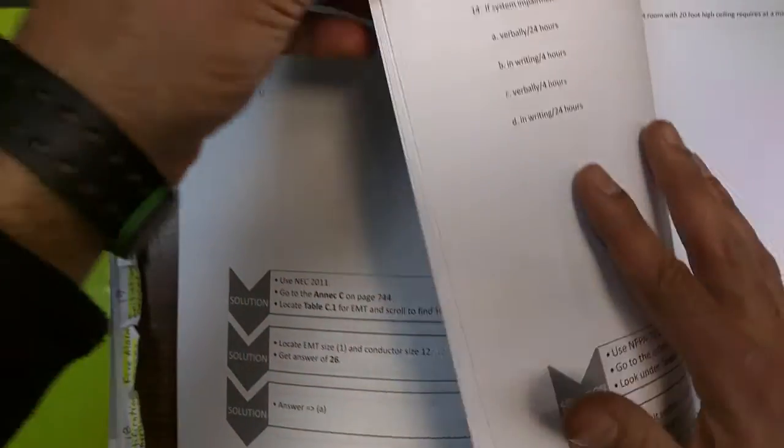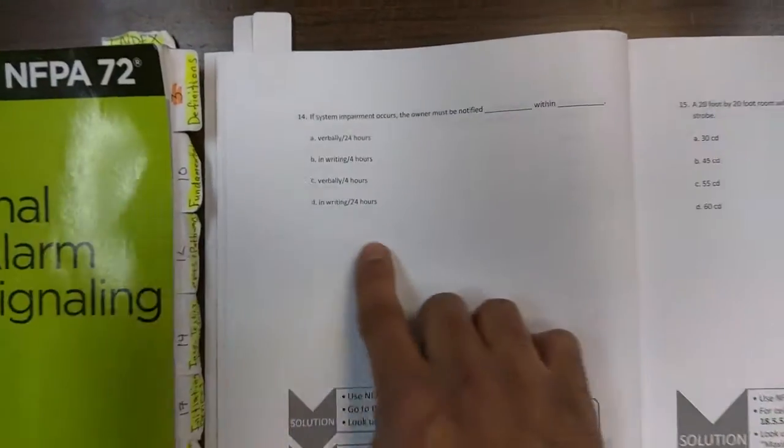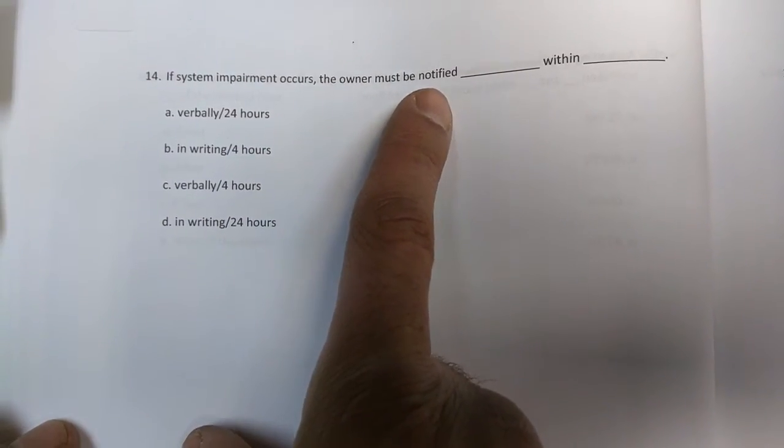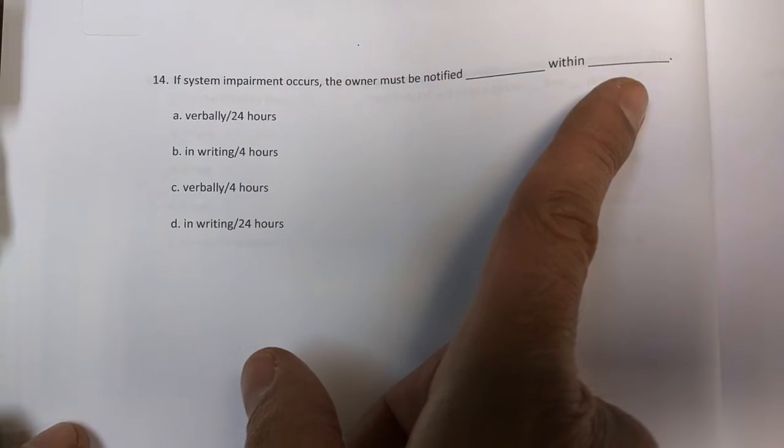Here's an example of a NFPA 72 question. If system impairment occurs, the owner must be notified blank within blank.